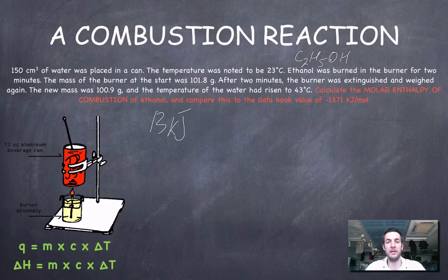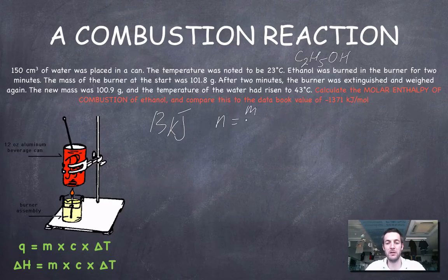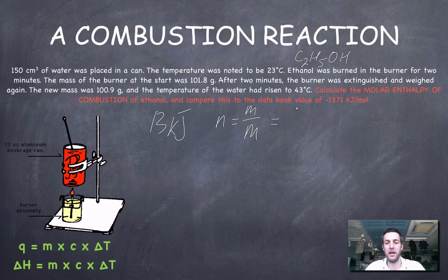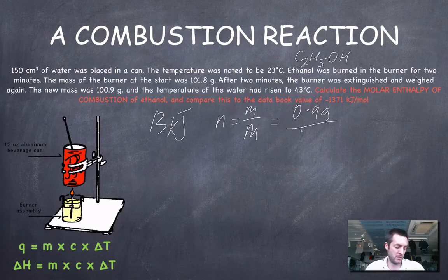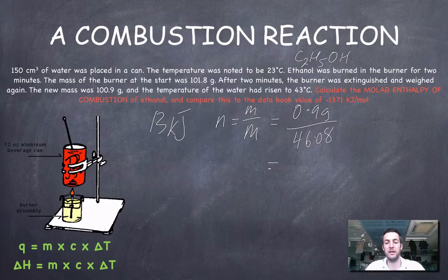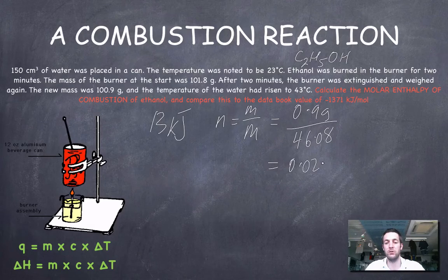So we're going to need to know how many moles of ethanol we've got. We need to know the mass of ethanol, because remember, the number of moles equals the mass over the molar mass. In this case, this equals 0.9 grams. We've only got one significant figure there, divided by the molar mass of 46.08. This equals 0.02 moles to one significant figure.